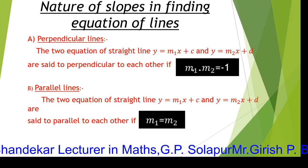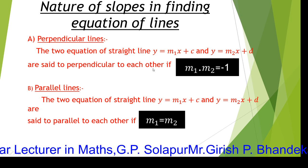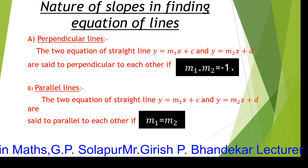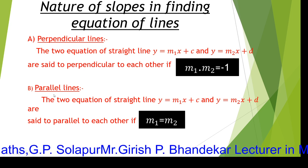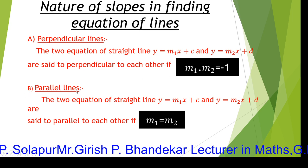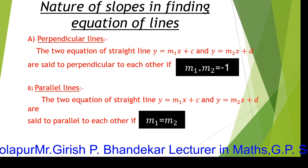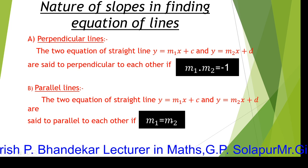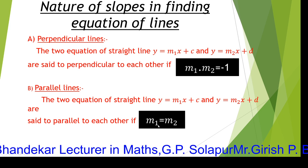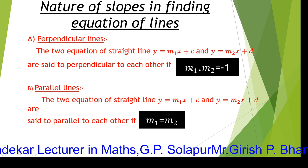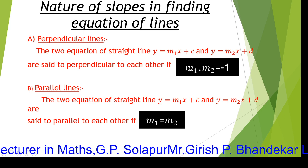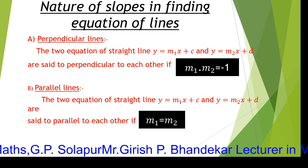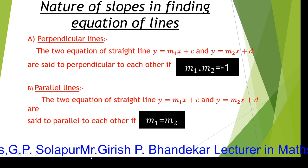So the two conditions are: two straight lines are perpendicular to each other if the product of their slopes is equal to minus 1, and two lines are parallel to each other if their slopes are equal — M1 equals M2.